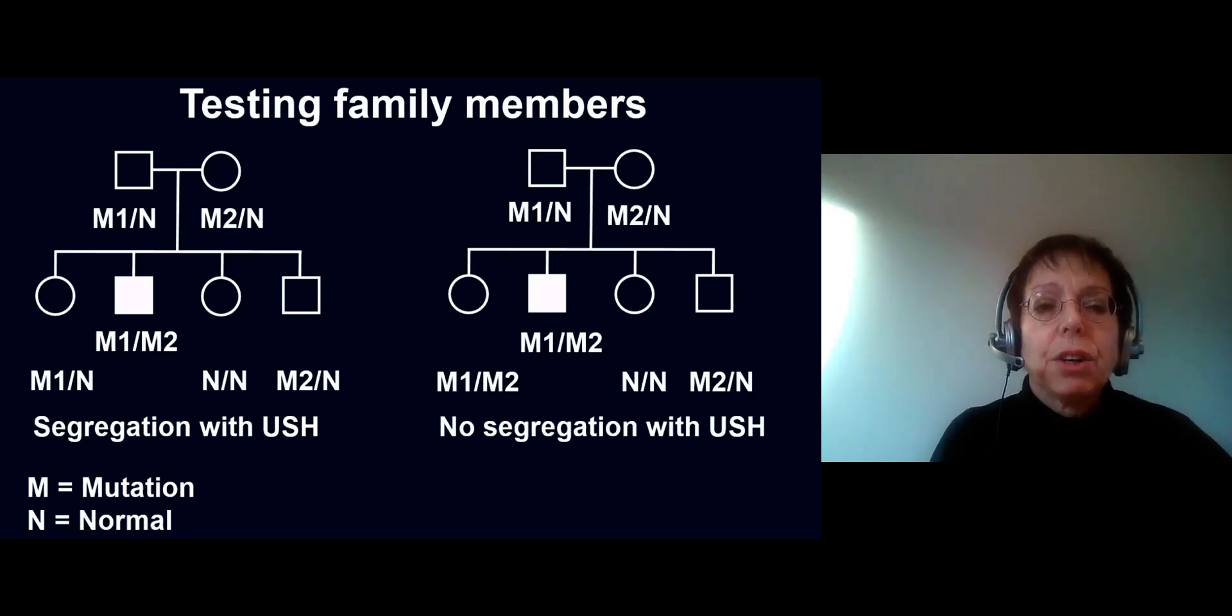So there is one important type of variants in the USH2A gene left. There still are cases with Usher syndrome type 2 where one change is found in the DNA that could be causative for the disease, and the second change in the other copy is not found, or no changes are found at all, although there is clear Usher type 2.